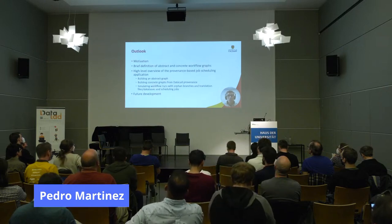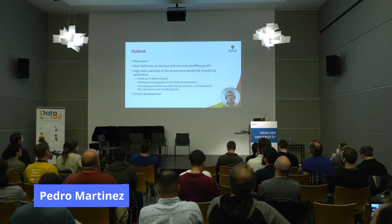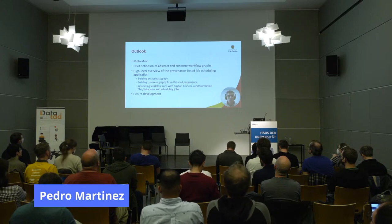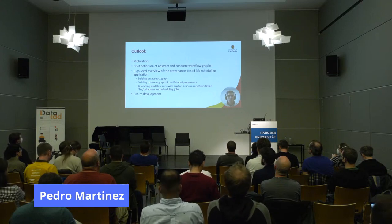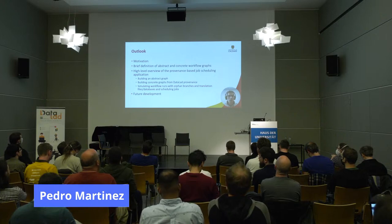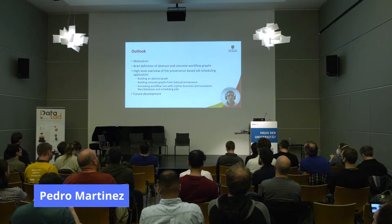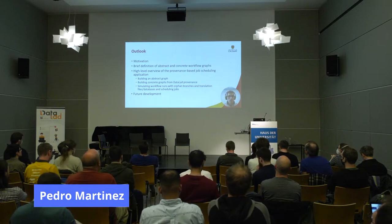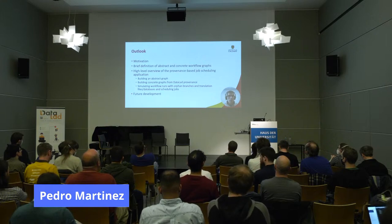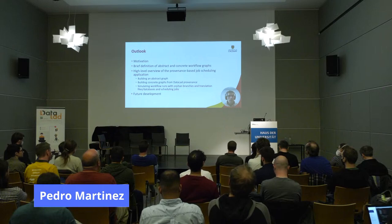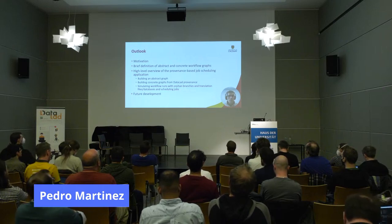This is an outline of this presentation. I would like to start by highlighting the motivation behind this work. Next I will go over the key concepts of abstract and concrete workflow graphs, which are the two main inputs to our application. Then I will provide an overview of the application and its components to build abstract and concrete graphs, compare these, and schedule jobs. Finally, I will talk about some future tasks and development ideas regarding provenance-centric job scheduling to extend the present work.